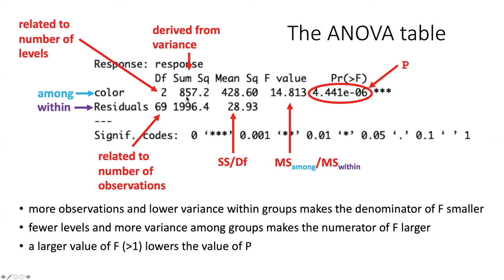We then take these two numbers and come up with another number called the mean square. The way that we get the mean square is to take the sum of squares and divide by the number of degrees of freedom. So 857 divided by 2 gives us this number. 1996.4 divided by 69 gives us this number. So this is basically a normalized sort of way of assessing the variation that comes from these two different sources.